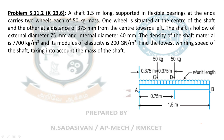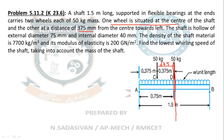The shaft carries 2 wheels each of 50 kg mass. This arrow mark is a dynamically equivalent representation of 2 disks placed here. We are not bothered about the shape or geometry — the mass of the disk is given as 50 kg. At a distance of 375 mm from the center towards the left is the second mass.